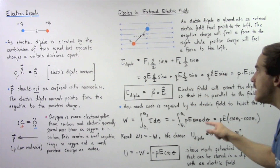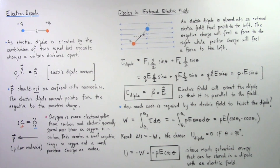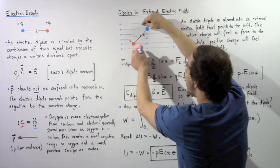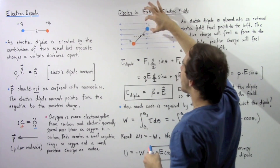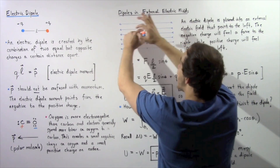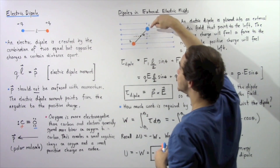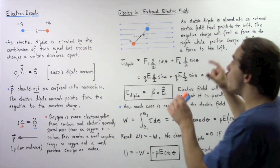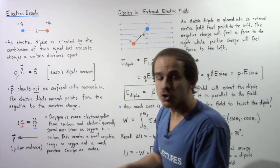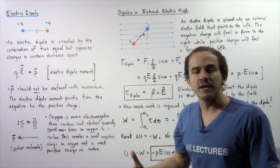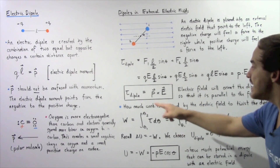The electric field tends to orient the dipole so that it is parallel to the field. The torque acts in the clockwise direction, rotating the dipole until the negative charge is on one side and the positive charge on the other, with L parallel to the electric field. When the electric field creates a force that moves our electric dipole, the electric field does work on it.